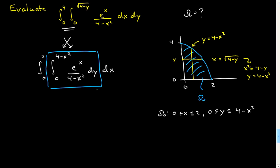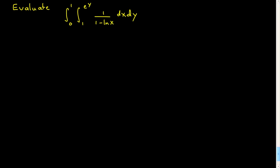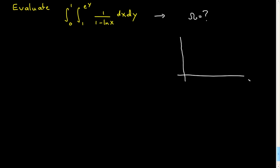One more, real fast — a little bit harder but same idea. Again, a past exam question where you're asked to evaluate this by reversing the order of integration. If you hadn't been told to do that, you'd see there's a real mess to integrate. So let's ask: what is omega, what is the domain? You may or may not need to do some algebra before plotting.